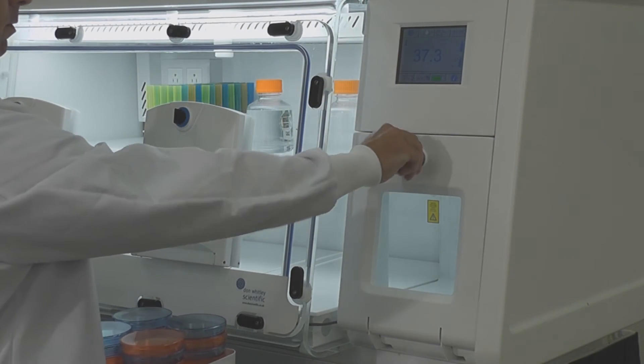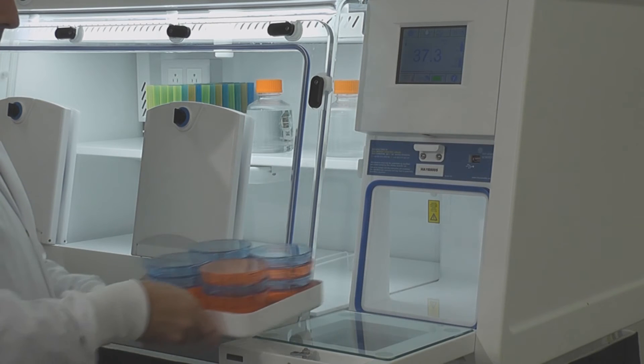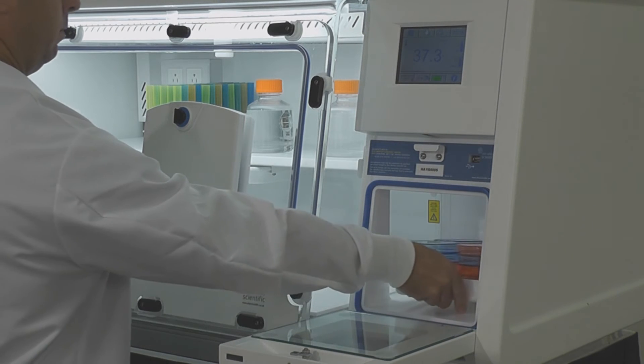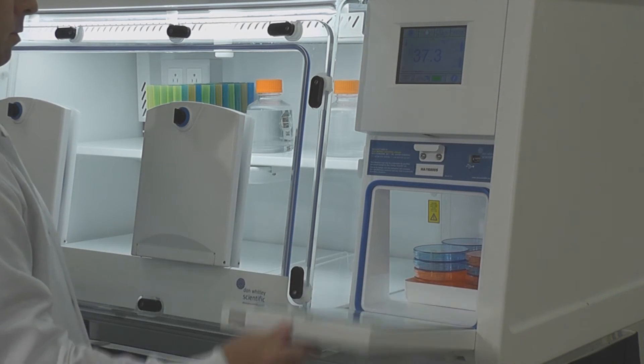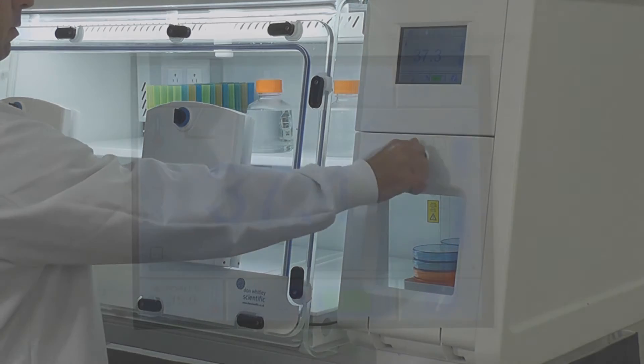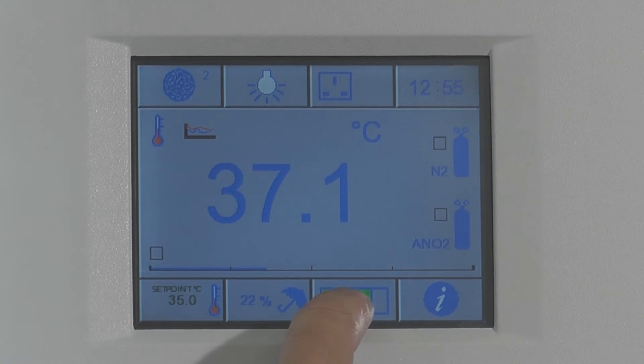Operating the airlock is very simple. Open the outer door and introduce your samples using the tray, then close the door. Initiate the airlock flush sequence by depressing the icon on the touch screen. After 60 seconds, the sequence is complete.